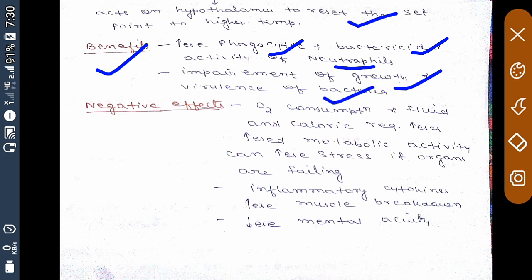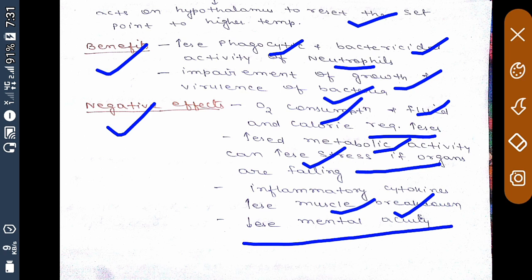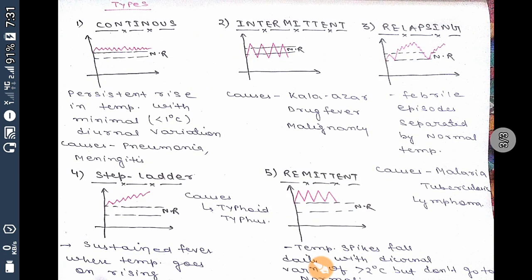Now coming to the negative effects of fever: fever increases oxygen consumption, and food and calorie requirements also increase. This increases metabolic activity and can increase stress if organs are failing. Fever can also increase inflammatory cytokines, cause muscle breakdown, and decrease mental acuity.